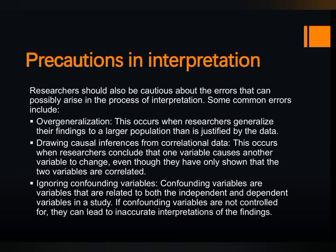The third precaution is ignoring confounding variables. Confounding variables are variables that are related to both the independent and dependent variables in a study. If confounding variables are not controlled for, they can lead to inaccurate interpretations. For example, in a study on coffee drinking and heart disease, coffee drinkers may have a higher risk of heart disease, but smoking cigarettes — a known risk factor — could be a confounding variable explaining the relationship.